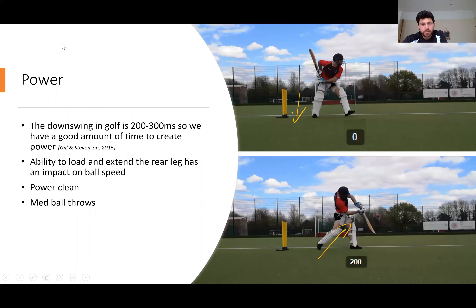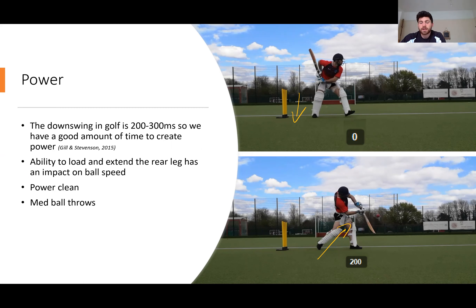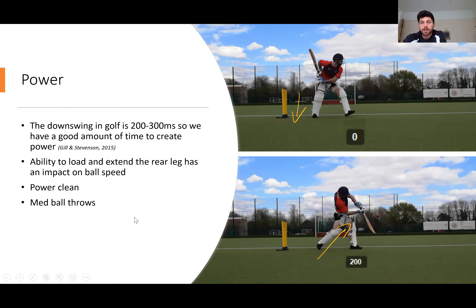Once we've increased strength, we move to power. In golf, the downswing takes 200 to 300 milliseconds — there's a good amount of time to create force. At the top of my downswing I'm at zero, and by the end of the downswing I've moved to 200 milliseconds. There's an ability to load and extend the rear leg — a force goes through the floor on the right-hand side and then extends through the body creating triple extension. Ways to provide triple extension in the gym include power cleans, and then we can move on to med ball throws to create that rotational power.